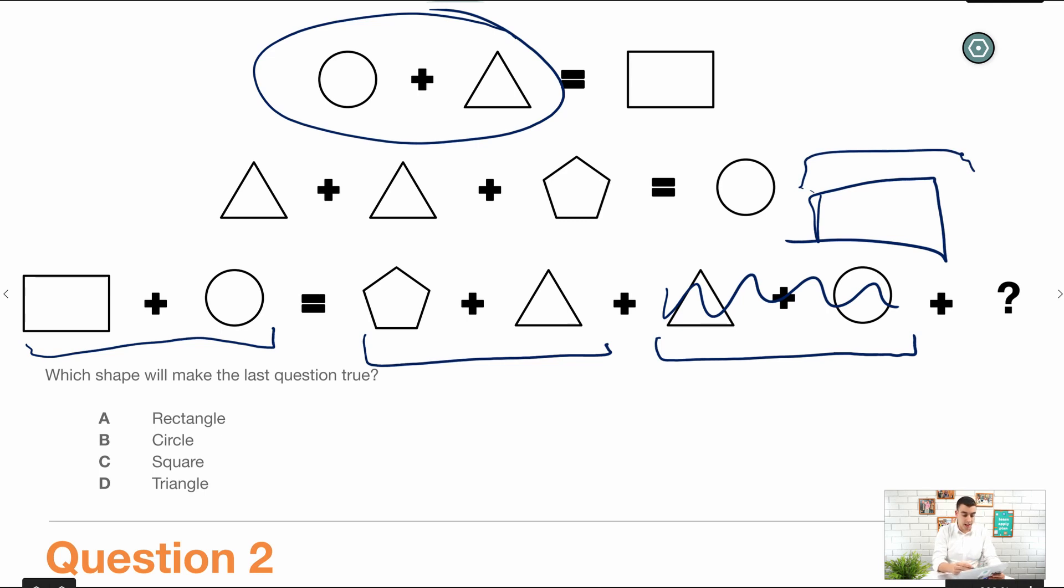Now using just simple maths we know if we have one rectangle on one side of the equality and a rectangle on the other side of the equality, we can minus a rectangle from both sides. You can draw that in if you want, minus rectangle minus rectangle. So that's scratched out.